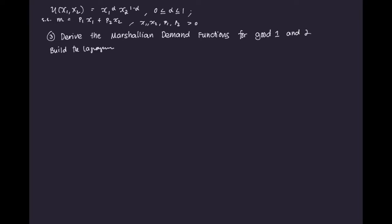Building the Lagrangian: we want to maximize utility. So let the Lagrangian be x1^α · x2^(1−α), subject to our constraint, which is M minus p1·x1 minus p2·x2. This is our objective function, and this is our constraint. We're going to use this Lagrangian to derive the Marshallian demand functions for good one and good two.